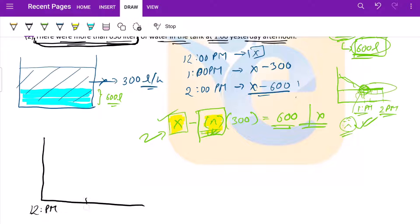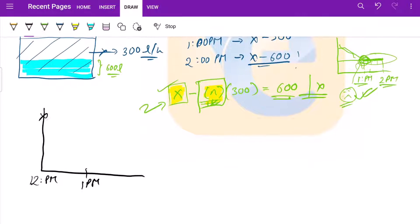Say for example, this is at 12 PM, this is 1 PM. At 12 PM we had a certain amount of water, it kept on decreasing. Since at 1 PM we are saying that it's more than 650, let me just redraw this graph for better clarity.